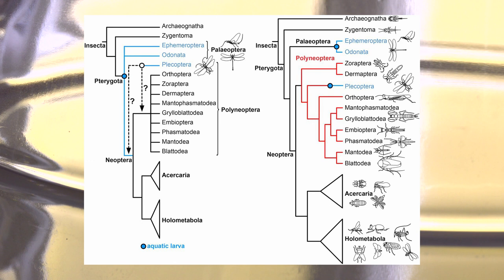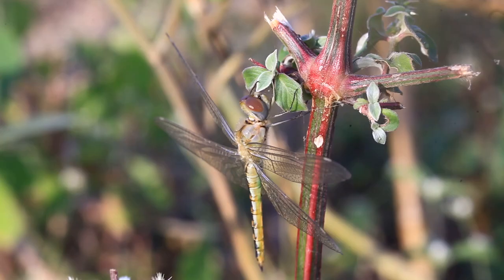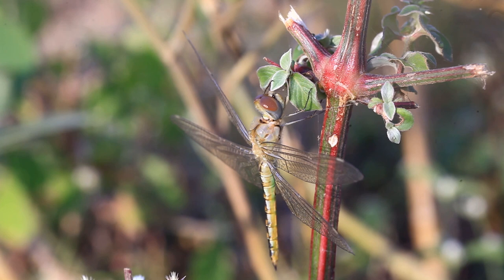Wings evolved only once in insects, meaning all winged insects share a common ancestor. The subclass of all winged insects, as well as insects who have had ancestors with wings but have since lost them, is known as Pterygota. At the most basal level, before certain pterygotes began to lose their wings, these insects possess two pairs of wings.